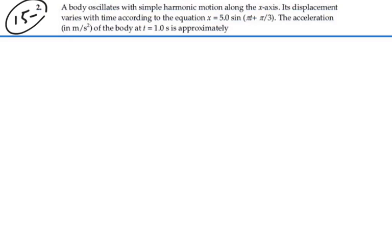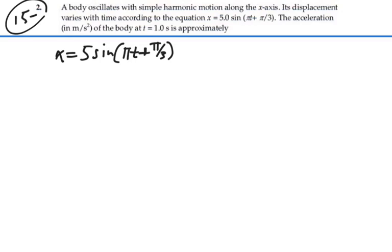So we have a displacement given by x equals 5 sine of (pi t plus pi over 3), and that will describe our position as a function of time.